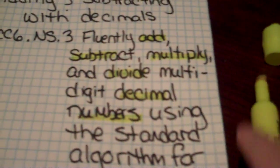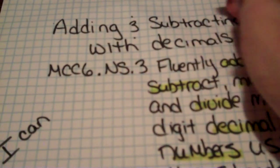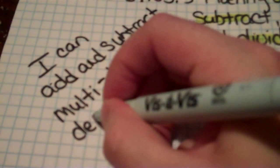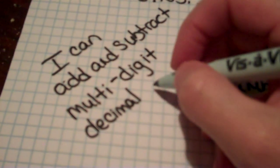So we're going to write this in our own words. So get your pen and write I can and because we're just doing adding and subtracting today, you're going to say I can add and subtract multi-digit decimal numbers and we're going to leave it at that. Alright, so we have written our I can statement for your Cornell notes.